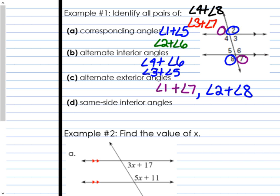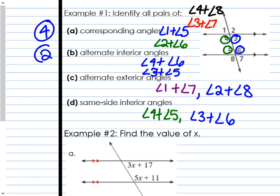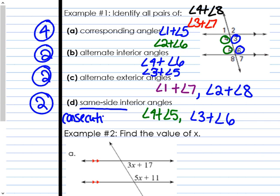Letter D: same side interior angles. Same side means they're on the same side of the transversal; interior means they're inside. So angle four and angle five are both on the left side of the transversal, and angle three and six are both on the right side of the transversal — those are same side interior angles. When you have two parallel lines cut by a transversal, you end up with four pairs of corresponding angles, two pairs of alternate interior, two pairs of alternate exterior, and two pairs of same side interior — ten pairs of angles total. Same side interior angles are also called consecutive.